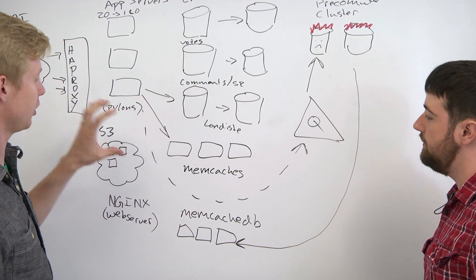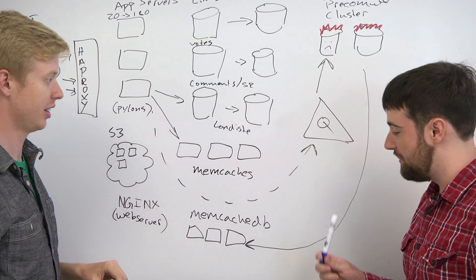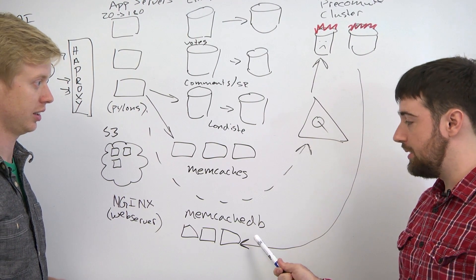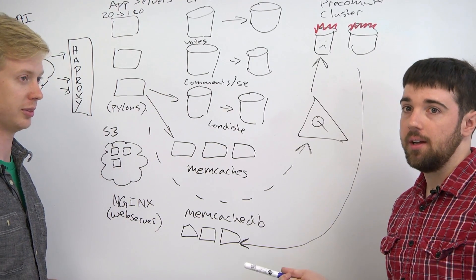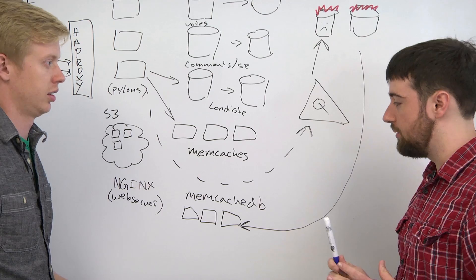So let's take it from which of these pieces don't exist anymore. Alright. So after you left but before I started, memcachedb hit a scaling wall and it just would not go any further. The writes were just too fast for it.